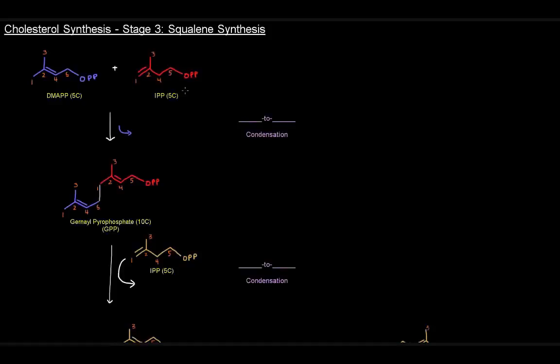In the last video we saw that we made IPP and DMAPP and we're going to have these as our isoprene units that we're going to link together to eventually make squalene.